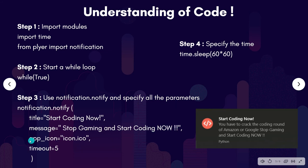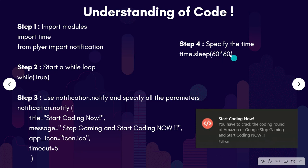Then we are going to give the name of our icon file, and after this we will set the timeout equals to 5 seconds. Then we will specify the time for the sleep method — I'm going to change this to 6 or 10 seconds so that we can test our application. The 60 multiplied by 60 denotes 1 hour.